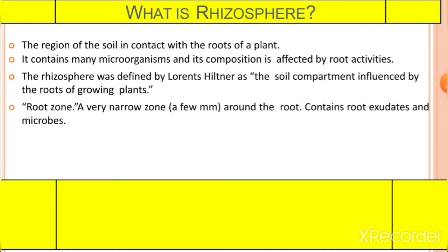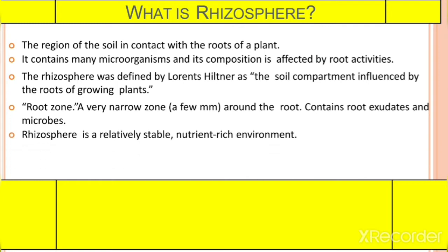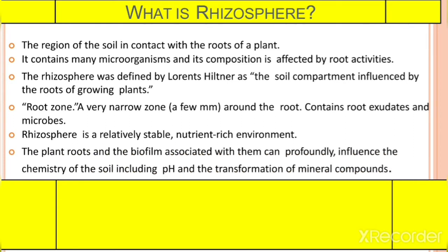It is also called the root zone — a very narrow zone around the root containing root exudates and microbes. The Rhizosphere is relatively stable and nutrient rich. Plant roots and the biofilm associated with them can profoundly influence the chemistry of the soil, including pH and the transformation of mineral compounds.